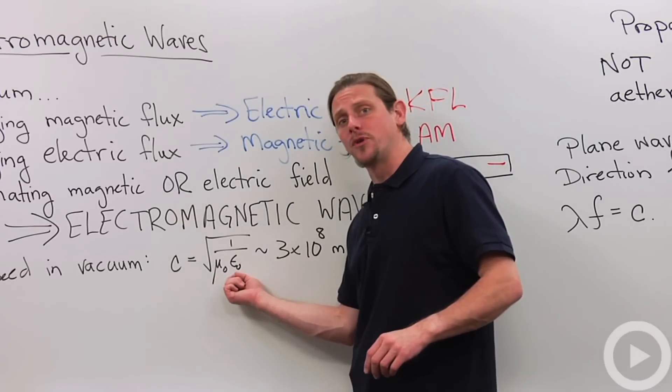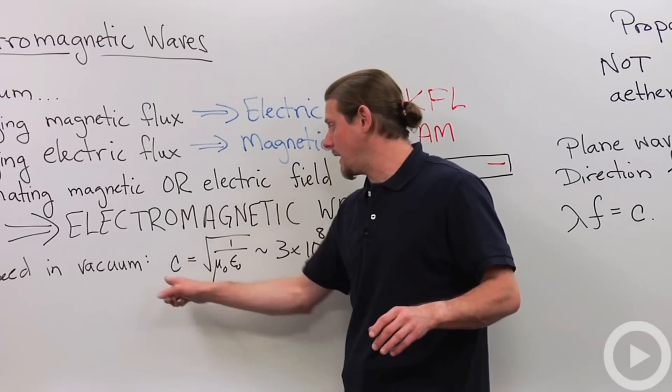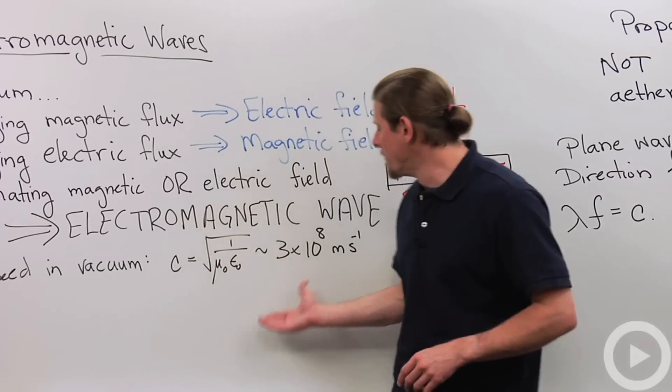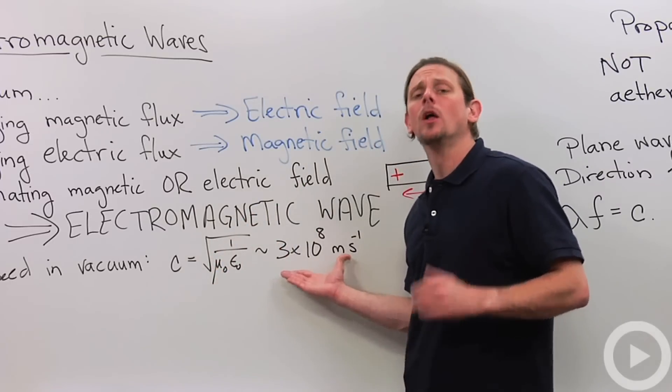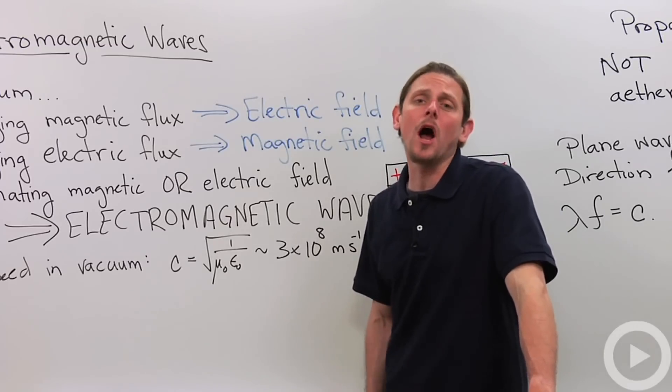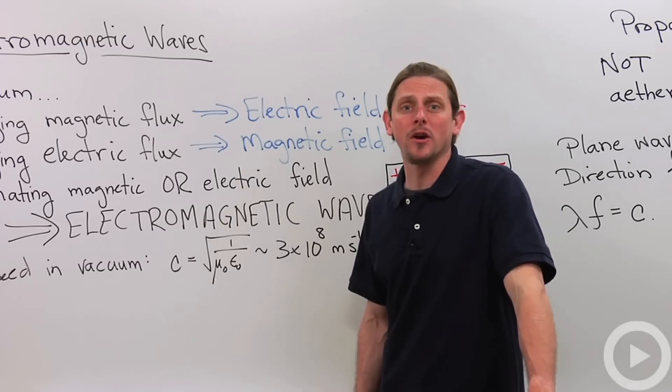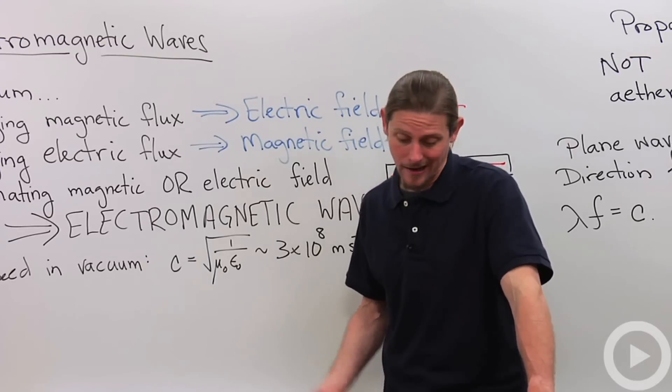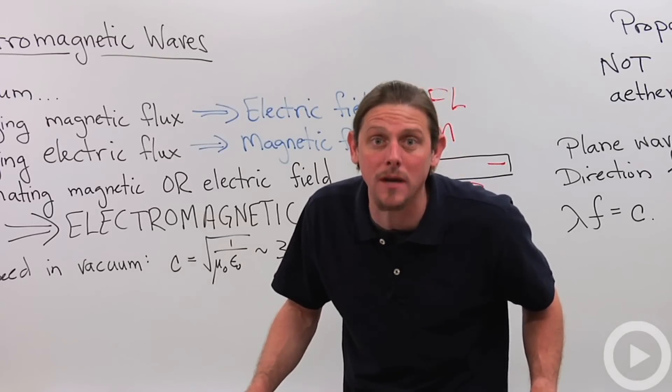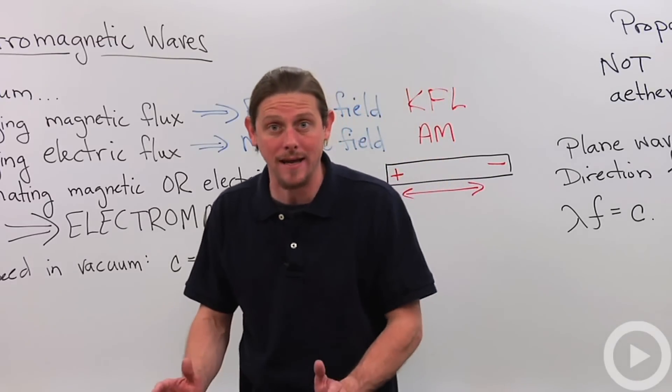So we can see them both together generating the speed of electromagnetic waves. Numerically this turns out to be three times ten to the eighth meters per second or about 300 million meters per second, 300,000 kilometers per second, or 186,000 miles per second.